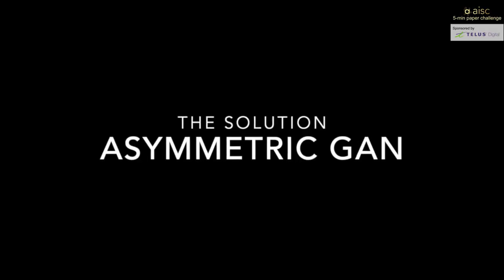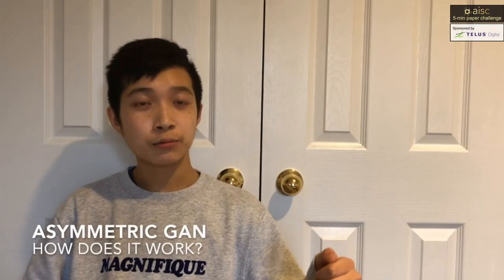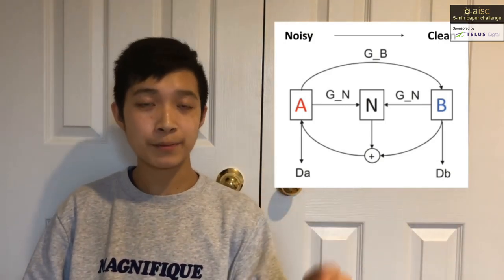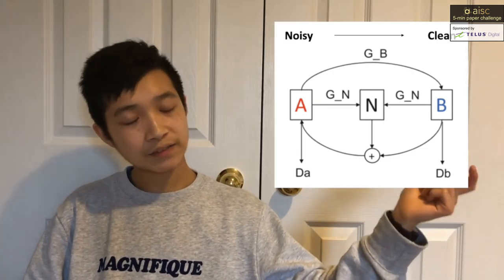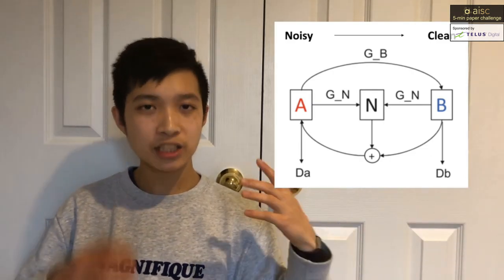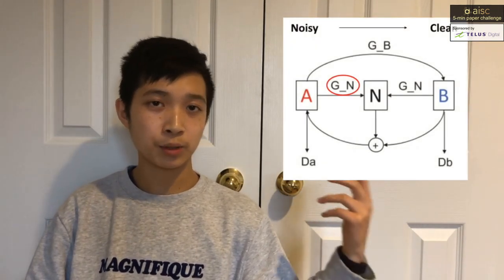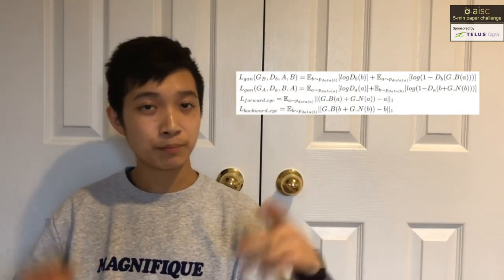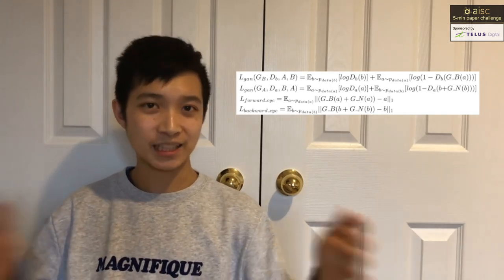In our case, a CycleGAN doesn't really work because when we're mapping from clean to noisy, how is the model supposed to know where the noise is supposed to go? We'll still have two domains — domain A for noisy and domain B for clean — and a generator mapping from A to B. But instead of a generator mapping from B back to A, we'll have a special generator G_N, which extracts the noise if the input is from domain A (noisy), and adds in the noise if the input is from domain B (clean). The losses and discriminators will work exactly as before. Since the forward and backward cycles are different, we call it an asymmetric GAN.